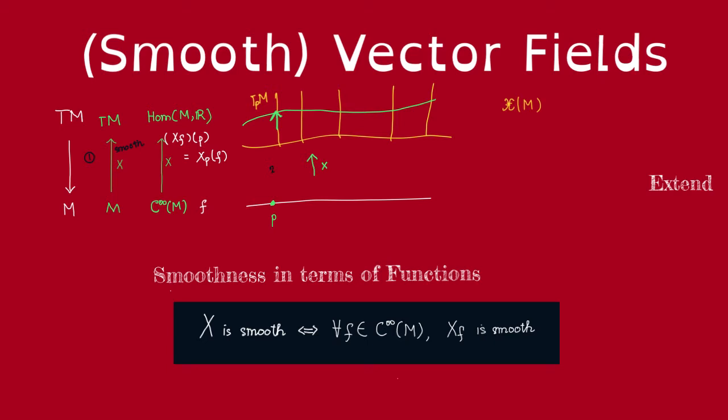Now, the second characterization is in terms of coordinate. Let's take a chart U X1 XM centered at P. Then we know that on this tangent space, we have a basis given by ∂/∂X1...∂/∂XM. Right, on these tangent spaces, all the tangent space over points in U. So then, that means over U, I can write the vector field X as a sum of some functions here, right? And partial, partial XI.